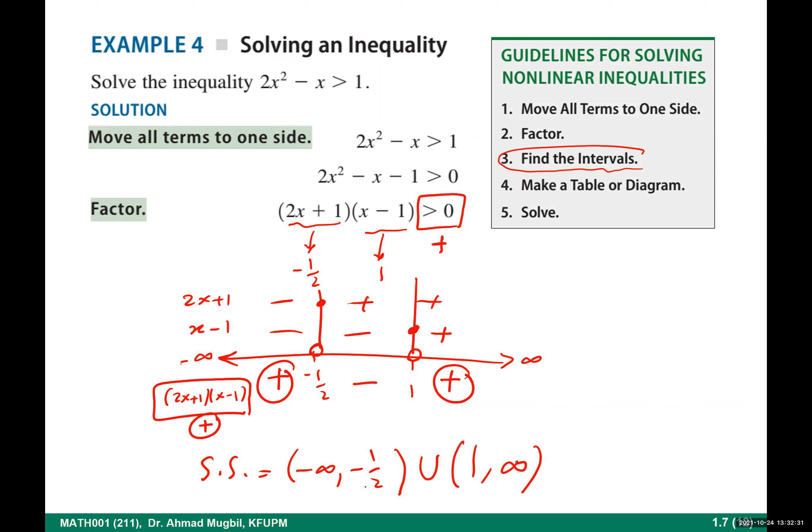We want the product to be greater than zero — positive. The solution set is the union: (−∞, −1/2) ∪ (1, ∞). Any number less than −1/2 or greater than 1 satisfies the inequality, but numbers between −1/2 and 1 do not.